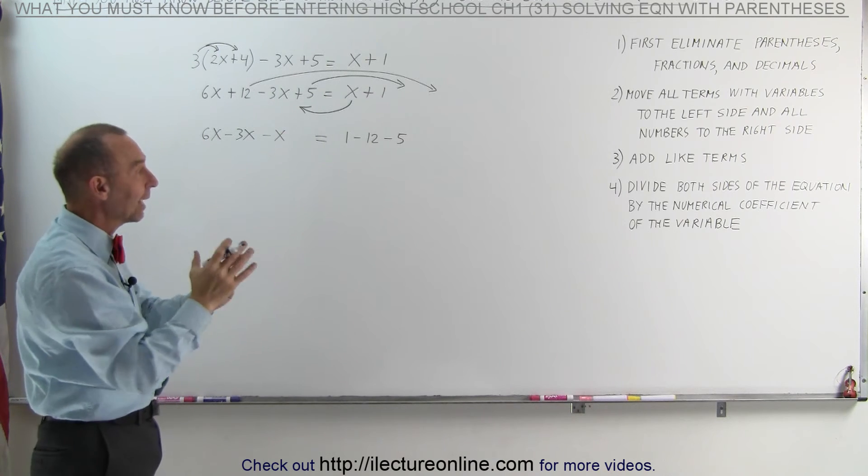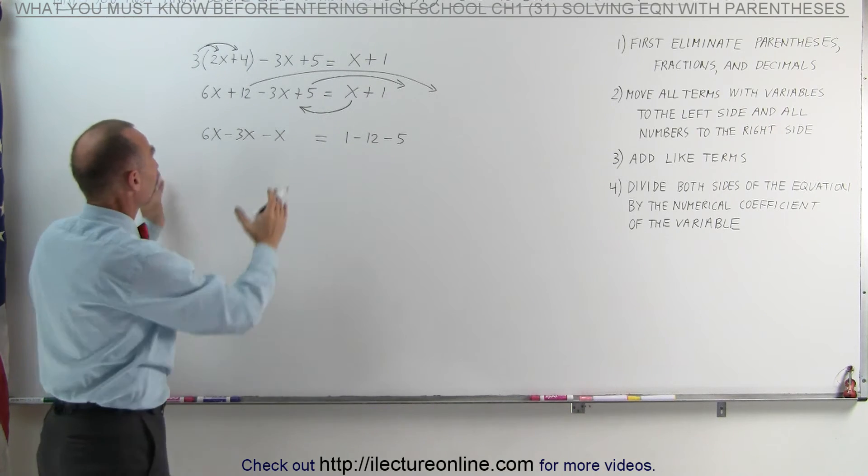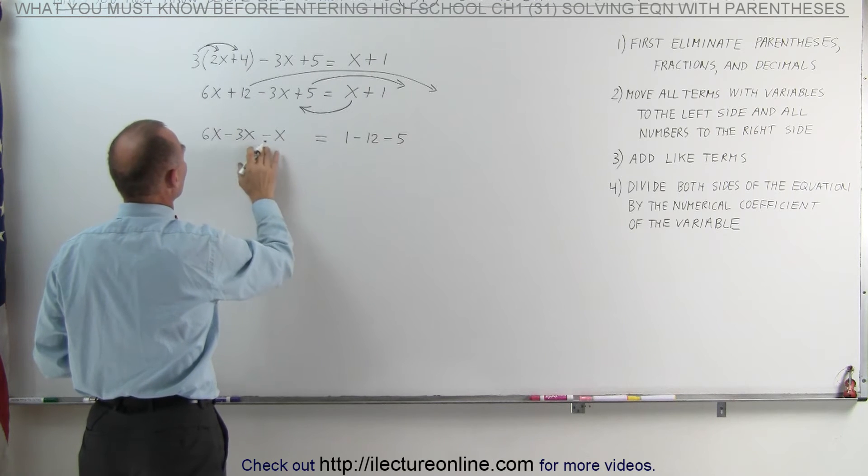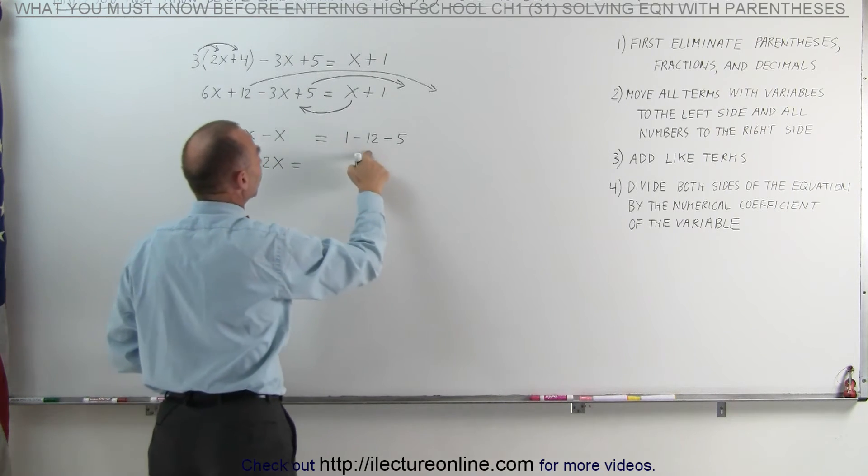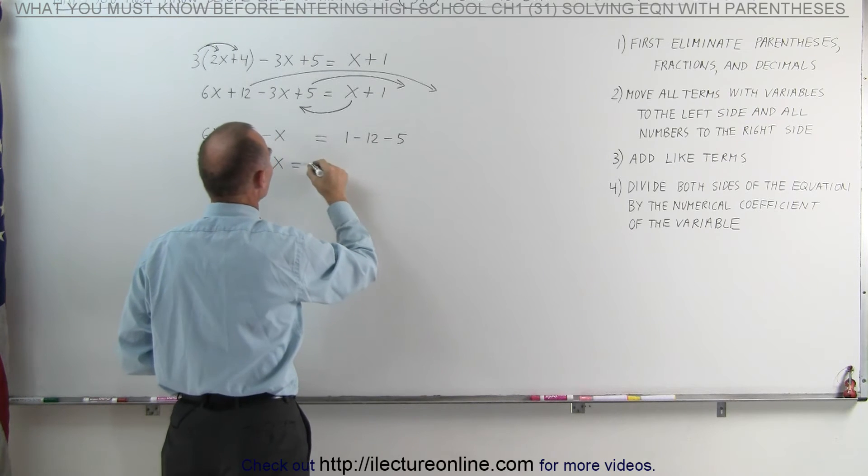Now we can combine like terms. That's step number 3. We're going to add these terms together. 6 minus 3 minus 1, which gives me 2x is equal to 1 minus 12 is minus 11, minus 5 is a minus 16.